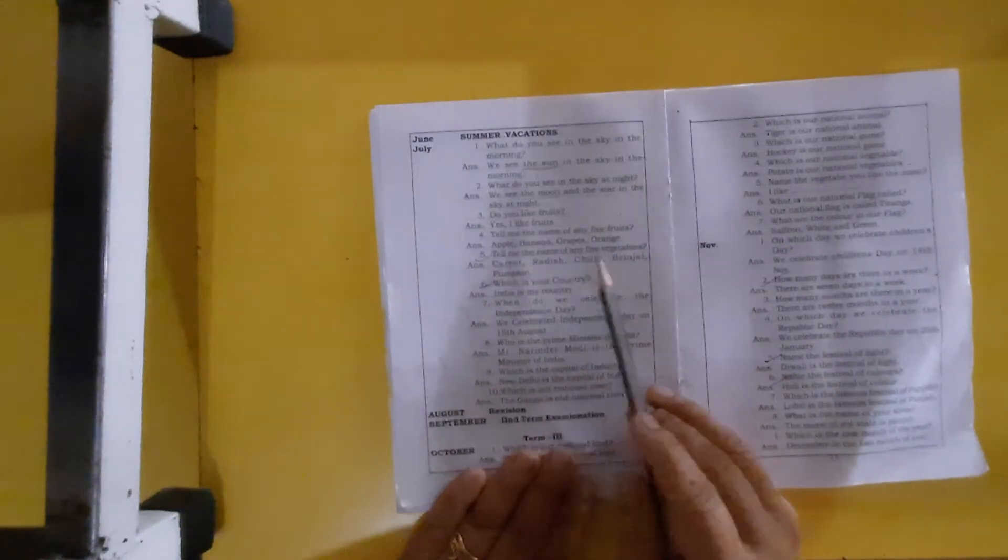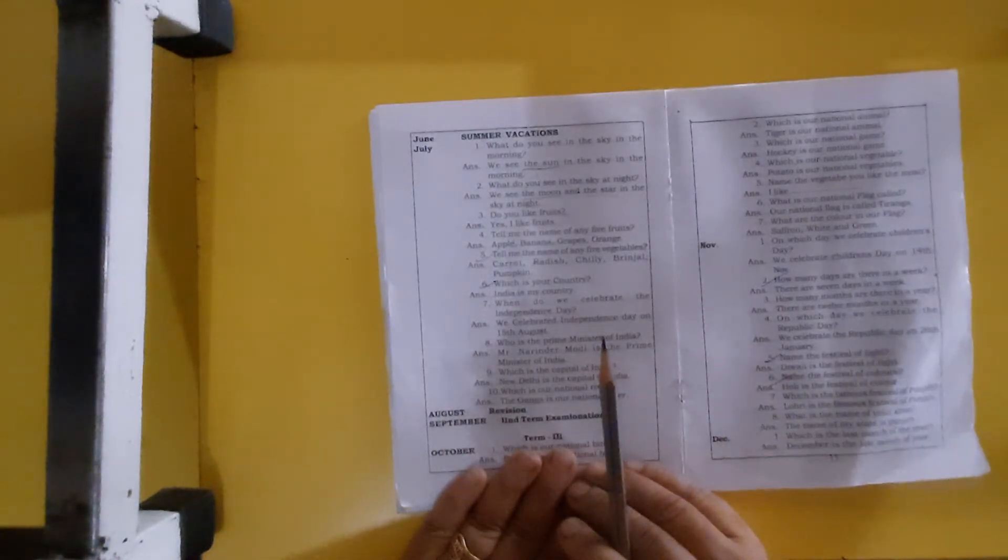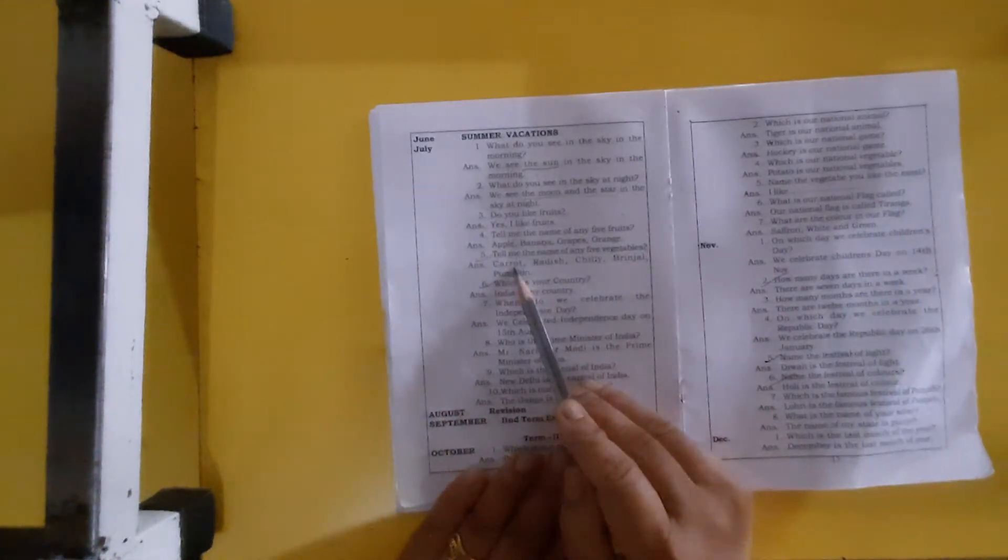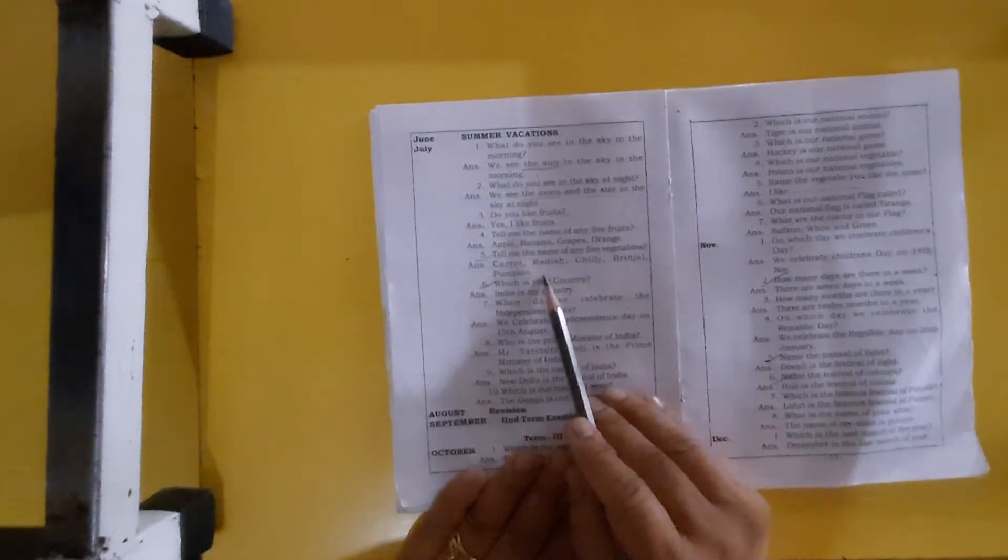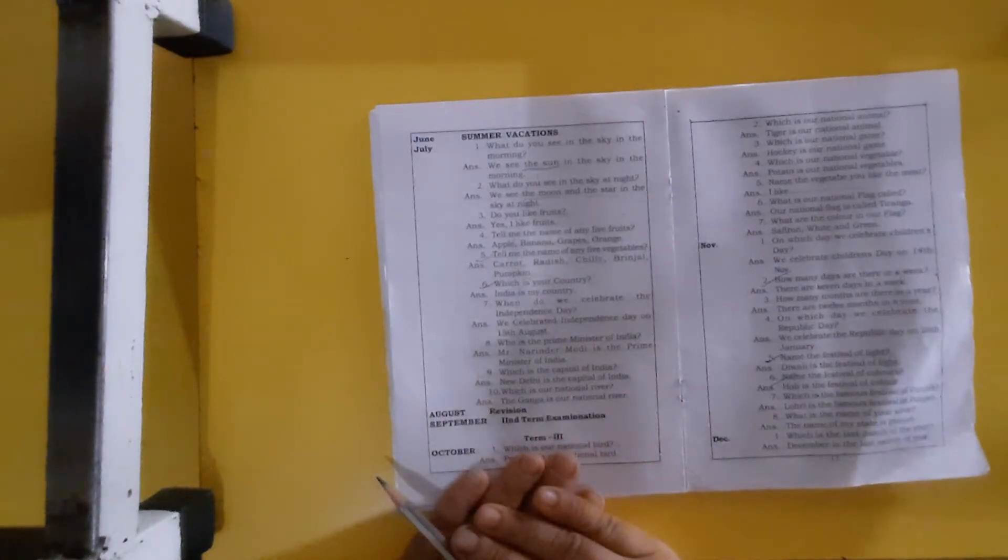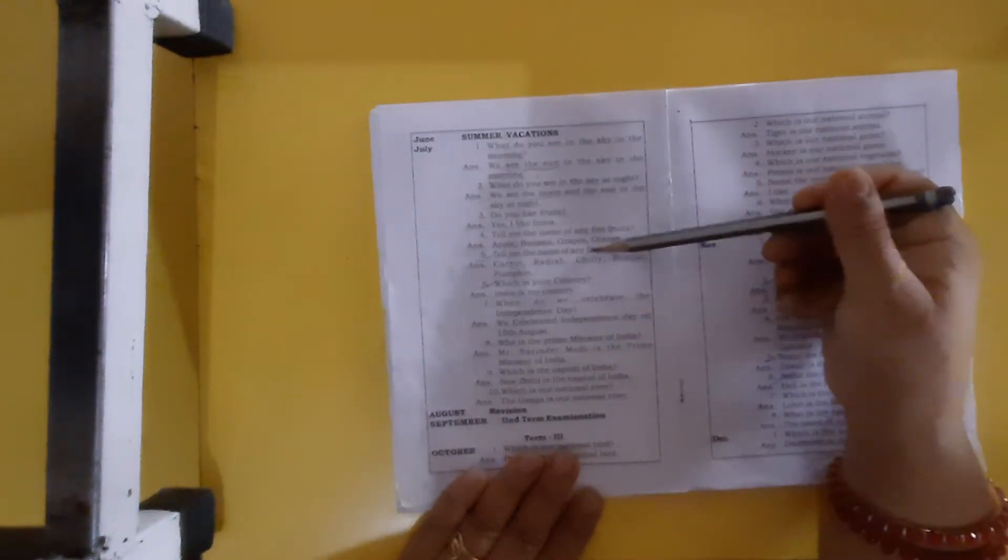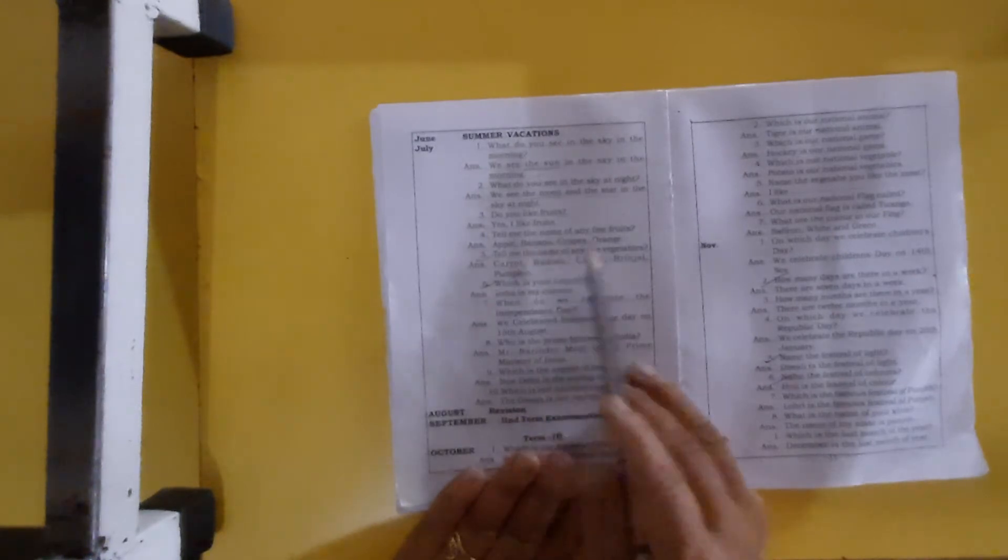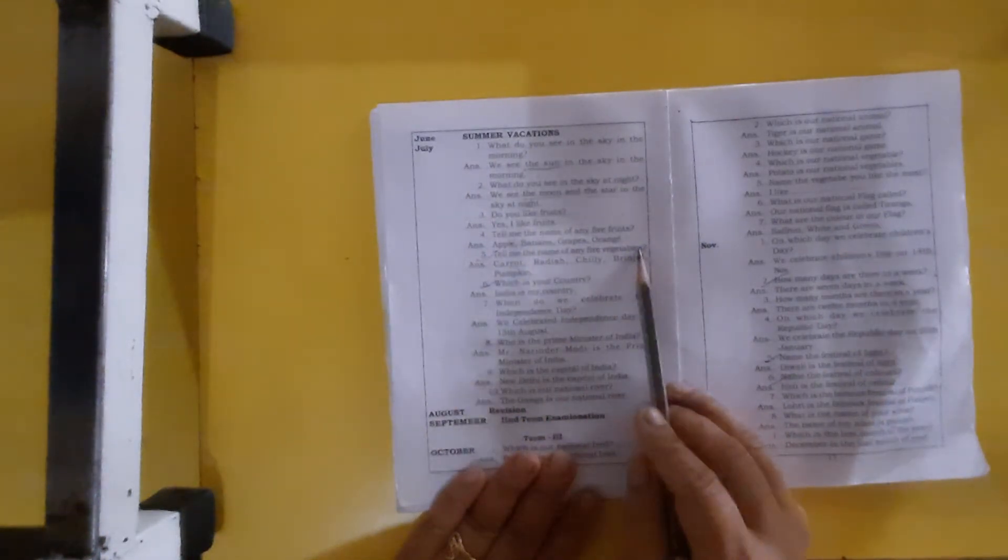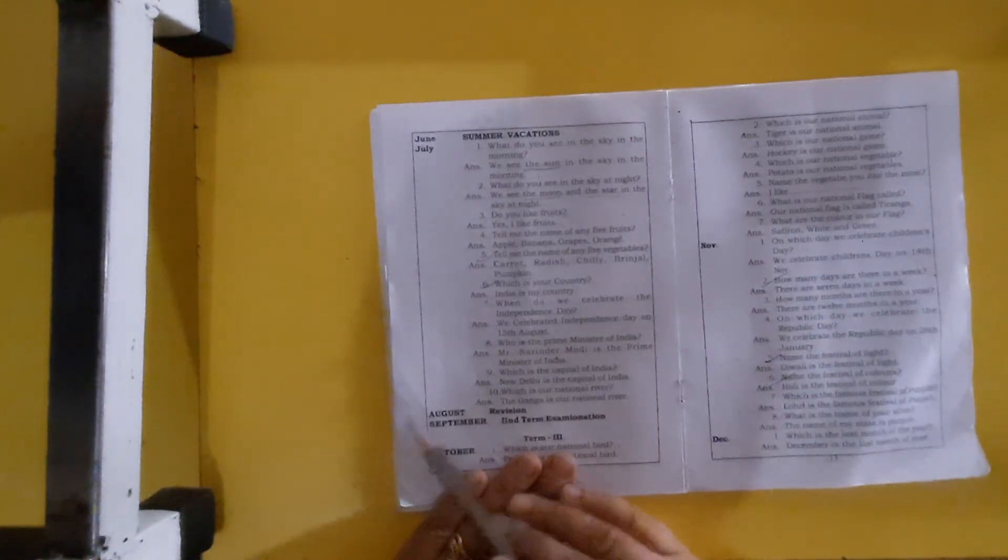Tell me the name of any five vegetables. Carrot, radish, chili, brinjal, pumpkin. Here you can say tomato, potato, anything. I will make you practice these five questions. You have to learn these five questions well again. Those who haven't learned should learn well, because the fruits and vegetables topic is already in your EVS book.